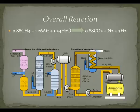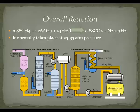Starting with the overall reaction: in order to produce ammonia, hydrogen gas and nitrogen gas need to be present. However, because there is not sufficient hydrogen supply in the air, the hydrogen gas needs to come from another source — in this case, methane. The overall reaction consists of methane, air, and water as reactants, which produce carbon monoxide, nitrogen, and hydrogen. The nitrogen and hydrogen are then used to produce ammonia.